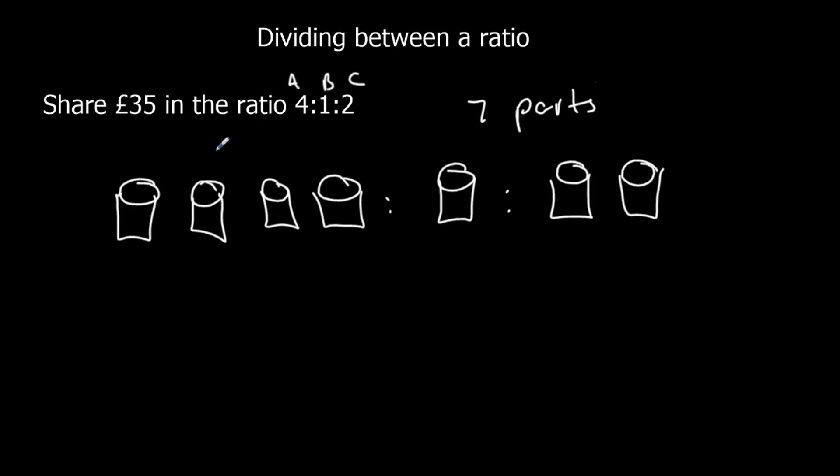We need to share, so 7 cups. We need to share the 35 pounds evenly between the 7 cups. 35 divided by 7, that's 5. So in each cup, we can put 5 pounds.